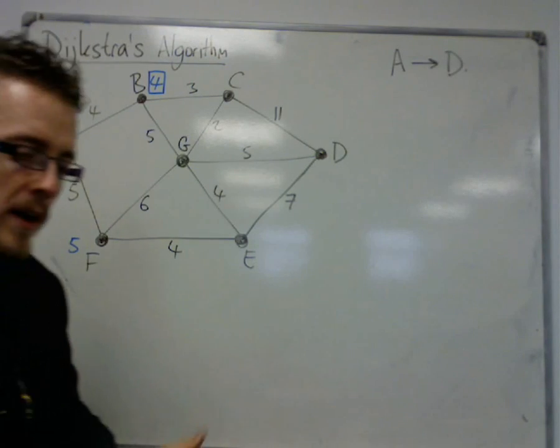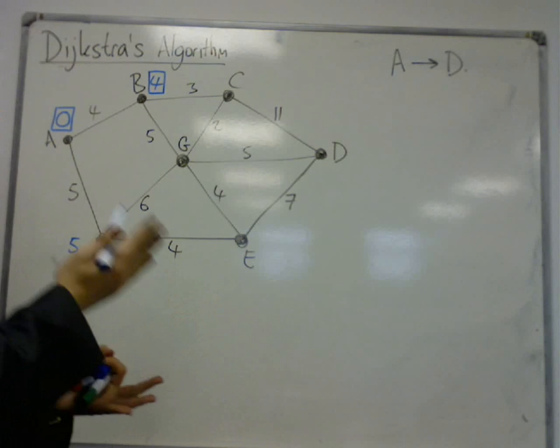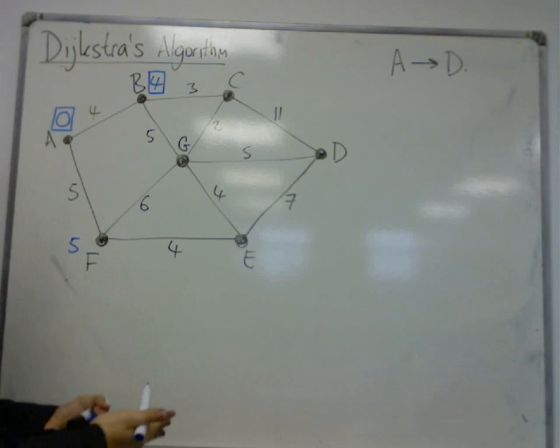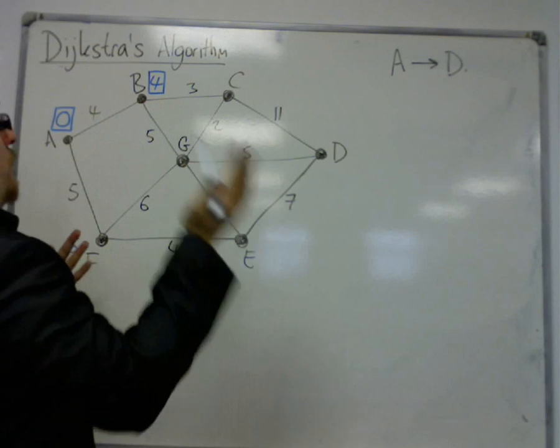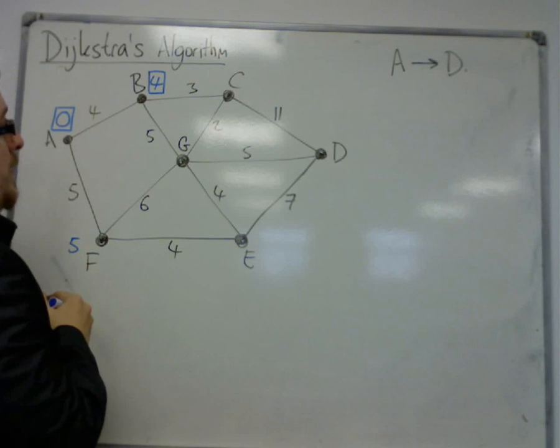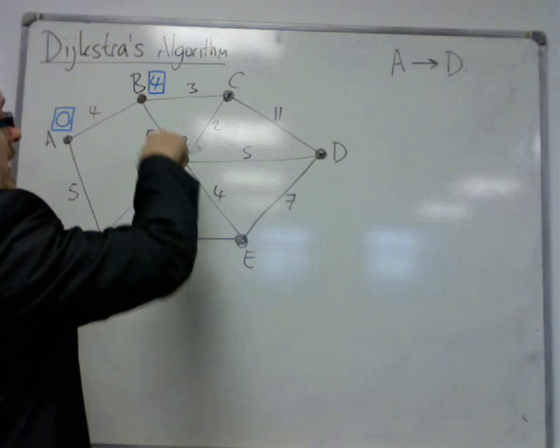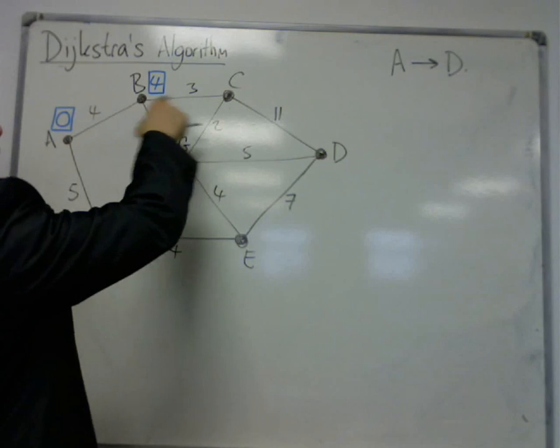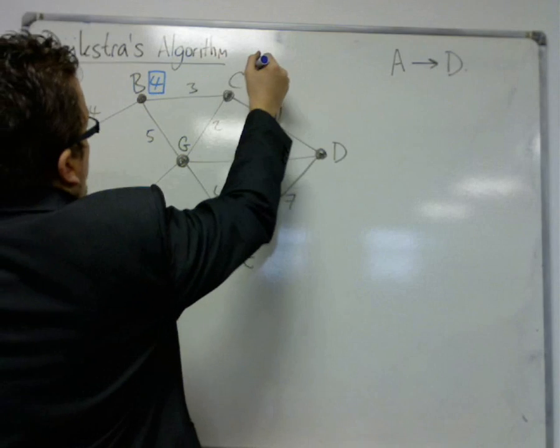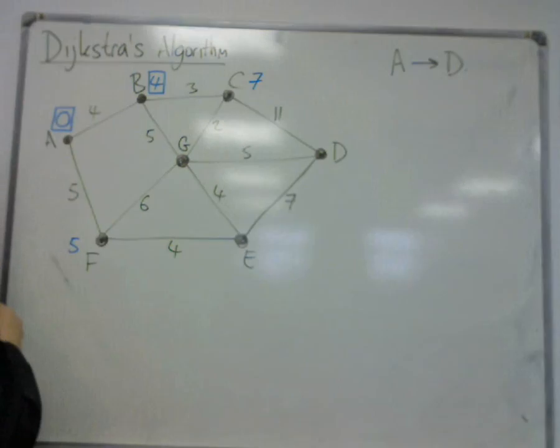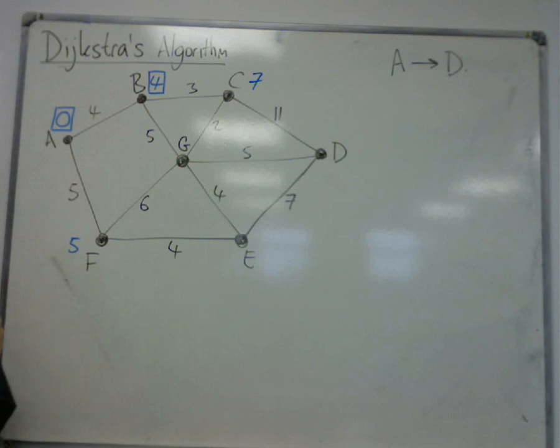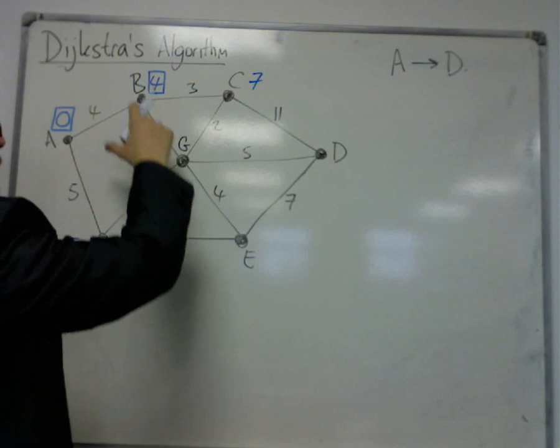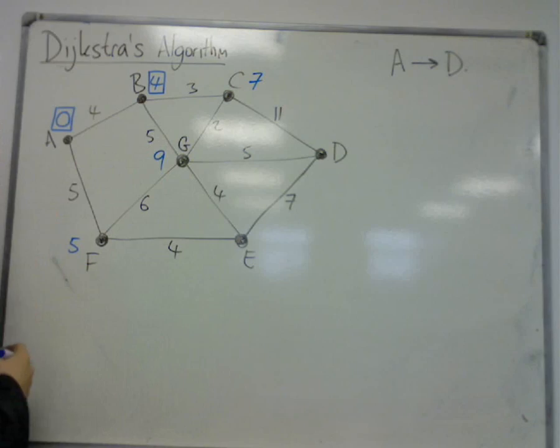Now I am at B, I'm considering 4, and then to get from B to any of the other vertices, I can either go to C or G. To get to C would be an extra 3, so it would be 4 plus 3 would get me to 7. And then from B to G would get me an extra 5, so that's 4 and 5 would be 9 if I took that route.